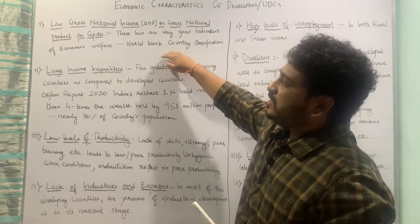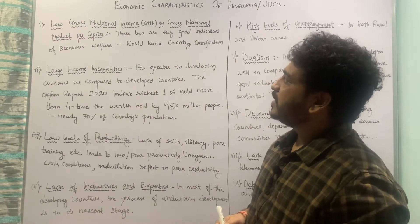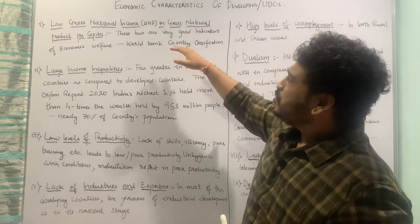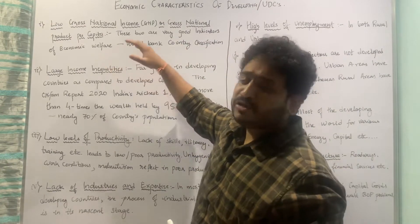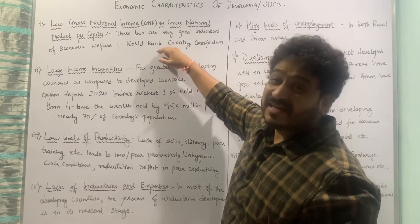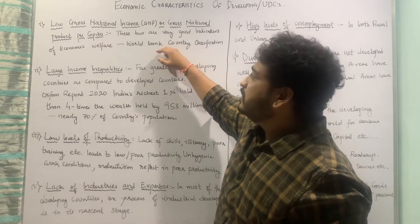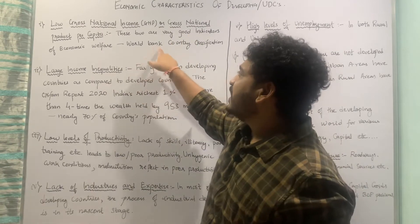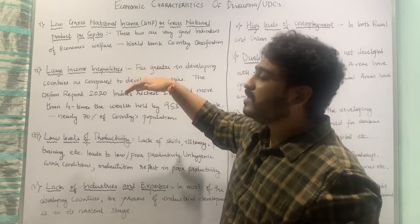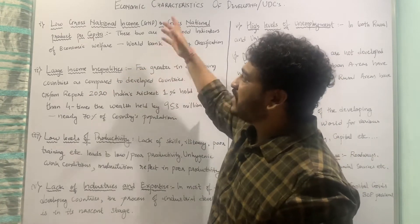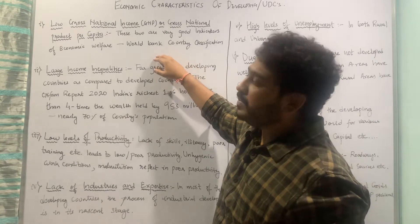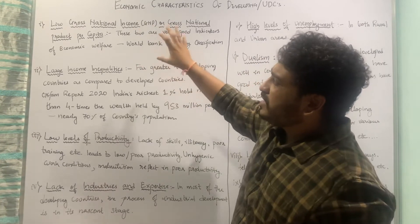The first economic characteristic is low gross national income per capita or low gross national product per capita. These two are very good indicators of economic welfare, and unfortunately we don't find good figures as far as developing countries, least developed countries, and underdeveloped countries are concerned. I have used the World Bank country classification to look at the lower income, middle income, and high income countries — please check that video for more insights.